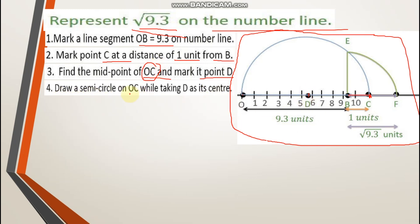What do you have to do? Draw a semicircle on OC while taking D as a center. Now you need to put your compass on D and draw a semicircle. You will draw this semicircle. When you place your compass on point D, draw from O to C. Because this was the midpoint of O to C, your semicircle will be drawn.